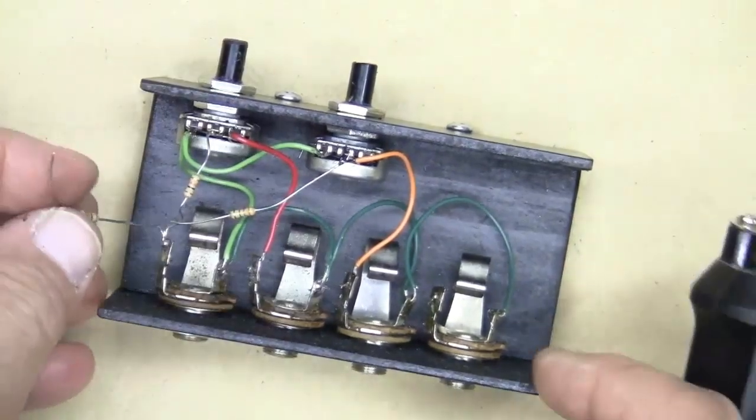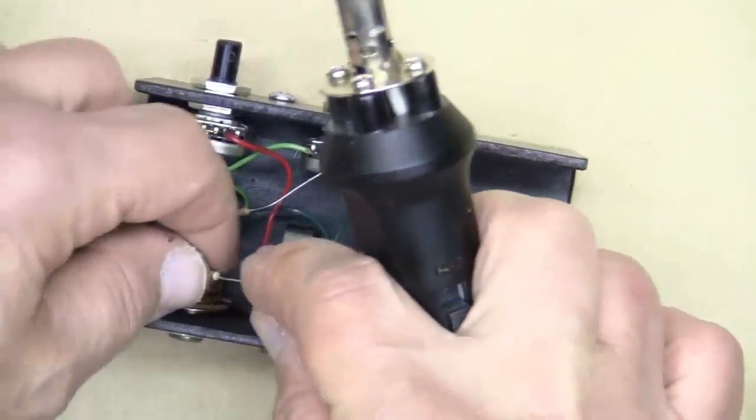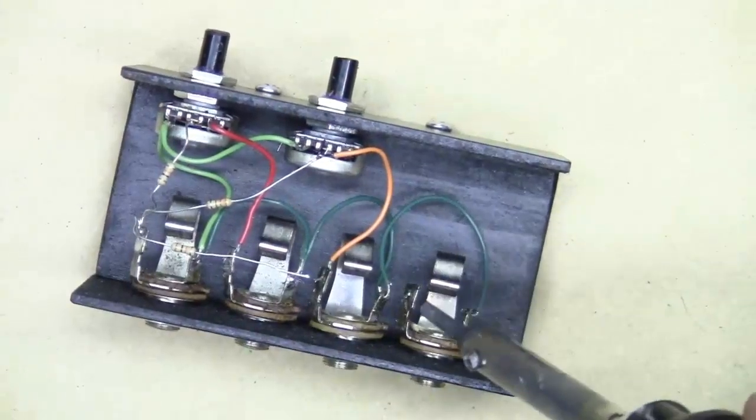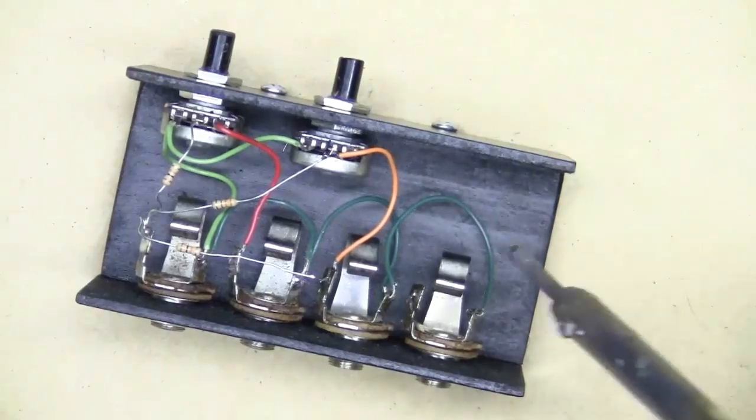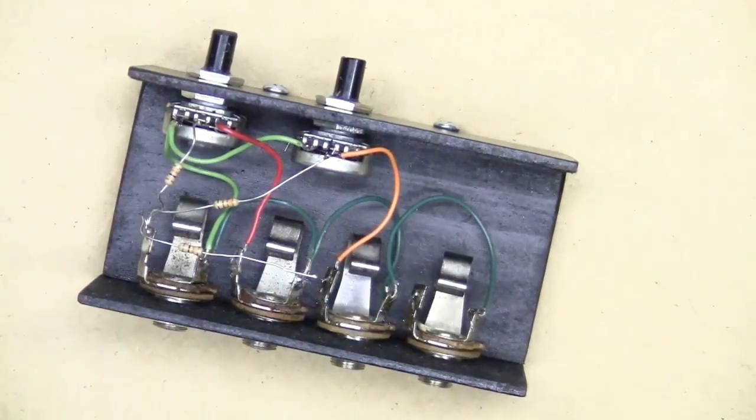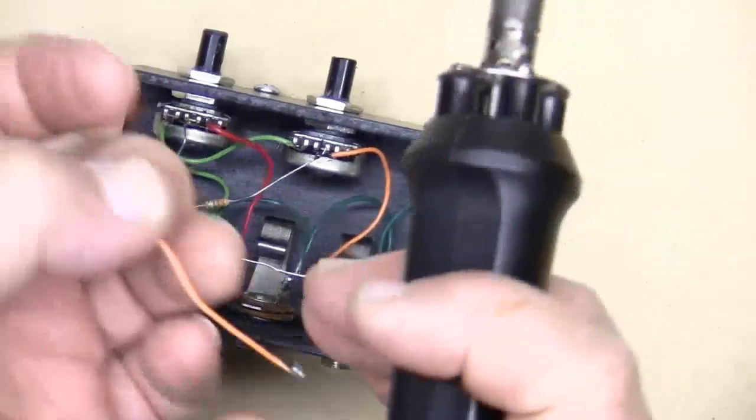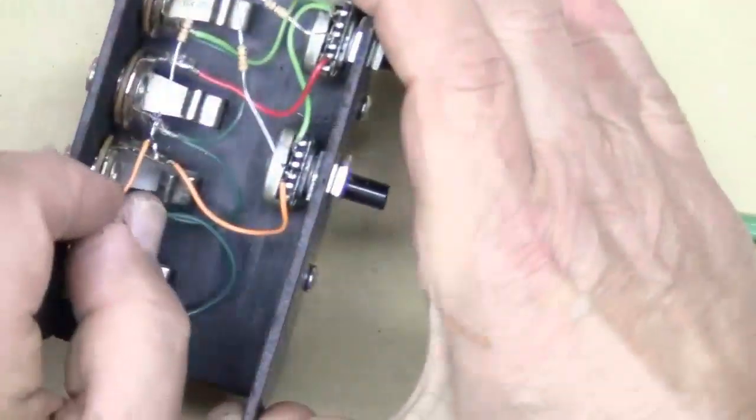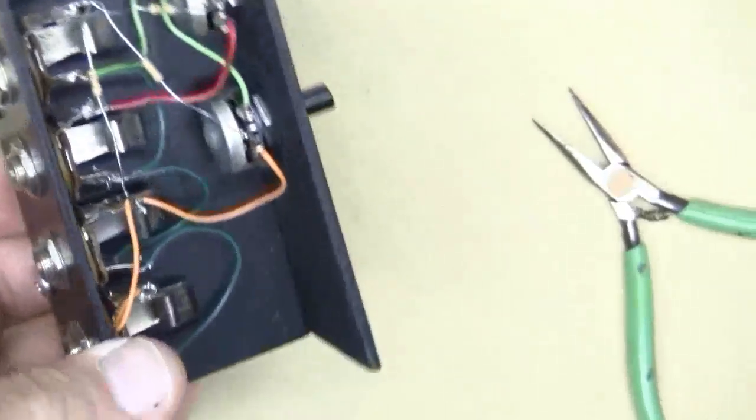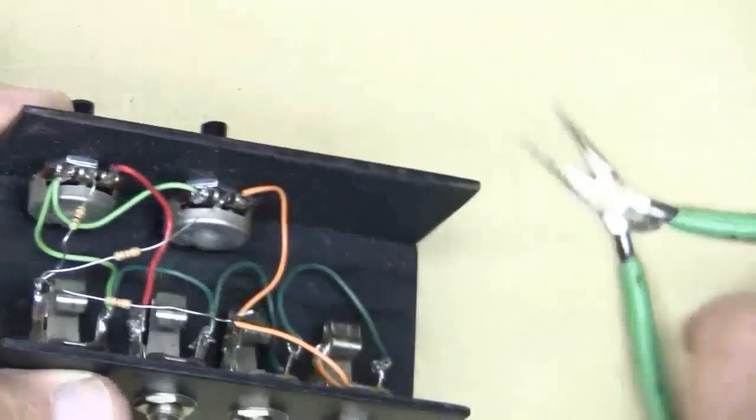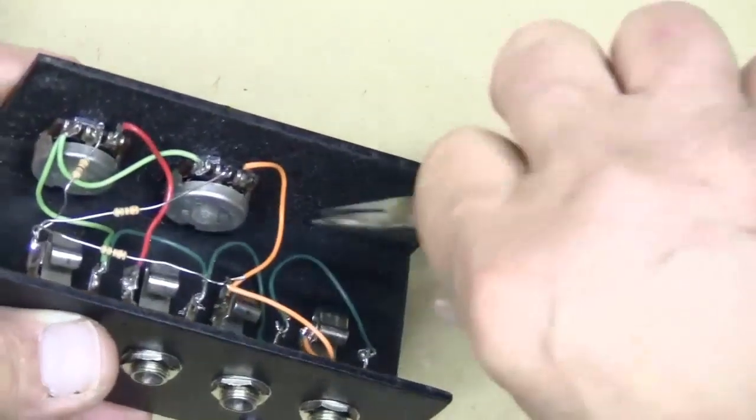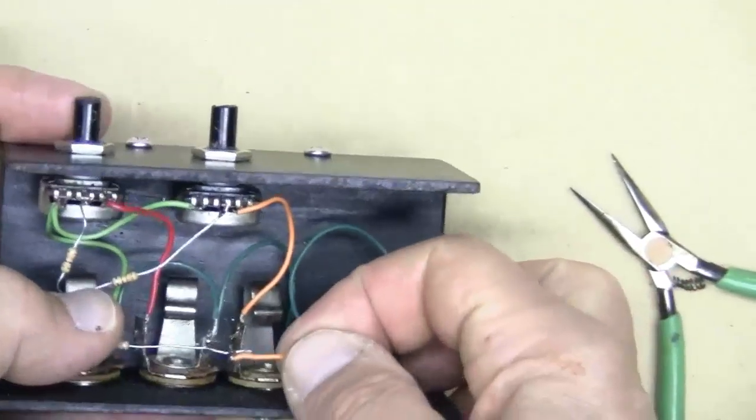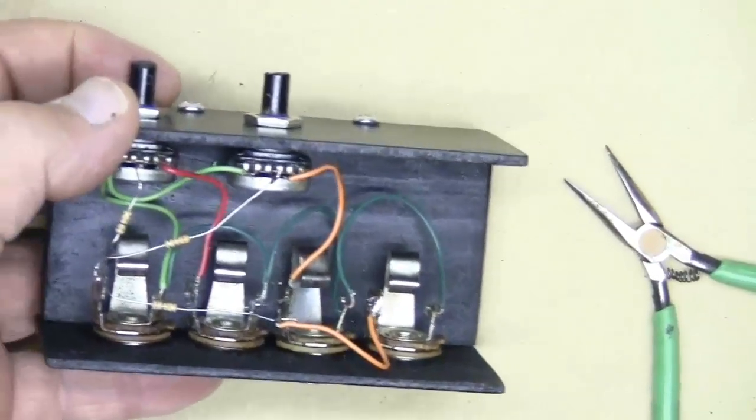There we go. Now the final connection is to take the remaining 10K resistor and connect it to the remaining lug on channel one. However, it doesn't go over far enough, so I'm going to use a little jumper. And that completes all of the electrical connections for the mixer. So let's put it together and give it a try.